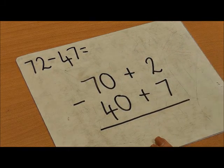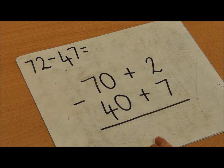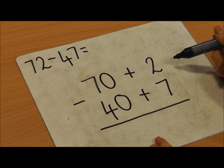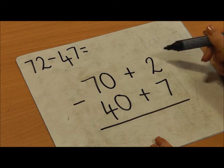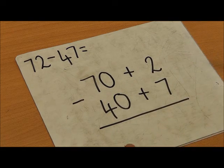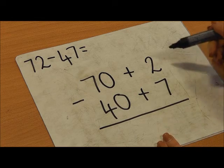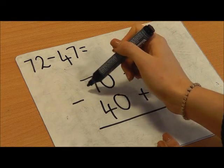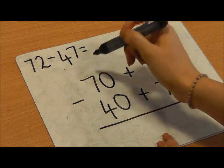Now I'm going to start taking away. Always start at the units. 2 take away 7 — I can't do it. I'm going to exchange a 10 from my larger number.